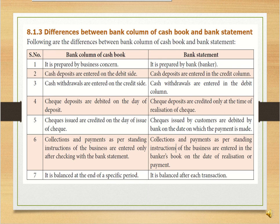The difference between the bank column of the cash book and the bank statement: in the cash book, the organization maintains the cash book, whereas the bank statement is prepared by a banker. If you have a debit balance in the cash book, in the bank statement we have the corresponding credit column. That means withdrawals appear on the credit side of the cash book and the debit side of the bank statement.